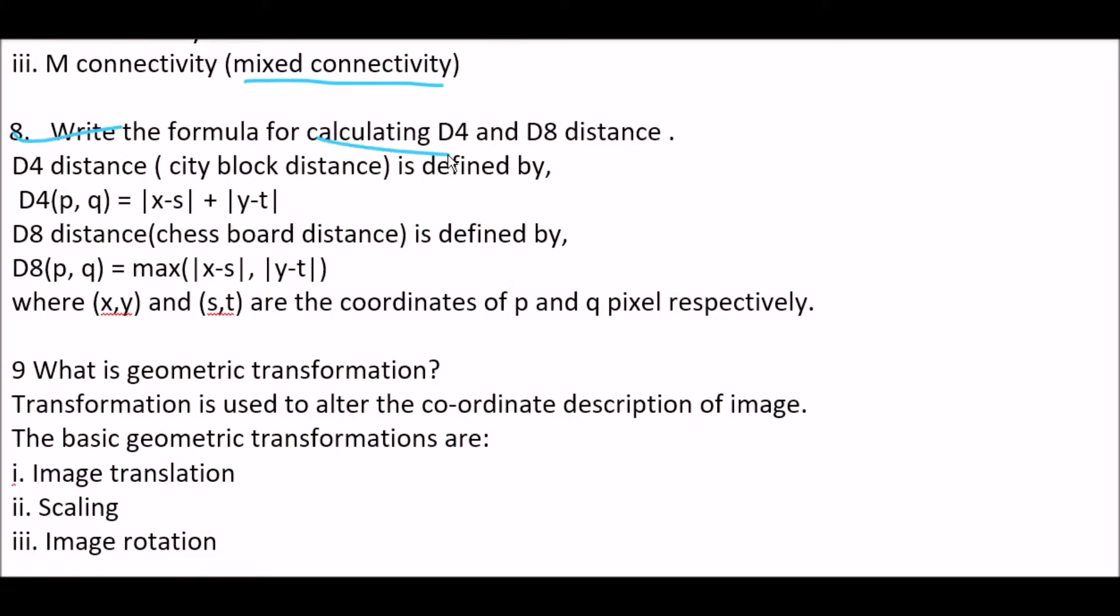Next question. Write the formula for calculating D4 and D8 distance. Answer is, D4 distance means city block distance, is defined by D4(P, Q) is equal to mod of X minus S plus mod of Y minus T, where X and Y and S and T are the coordinates of P and Q pixels respectively.